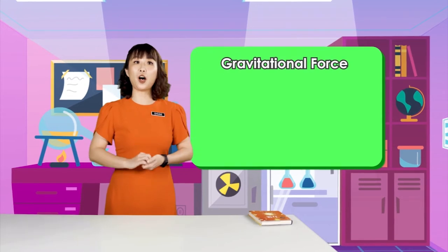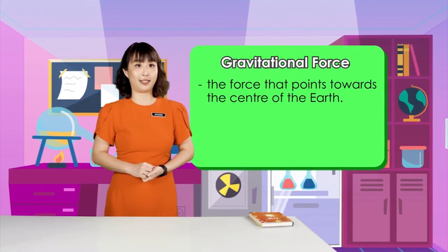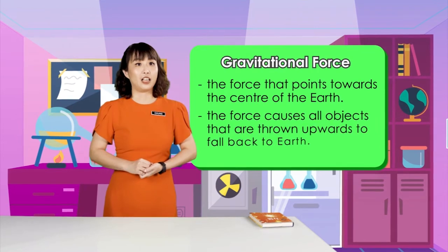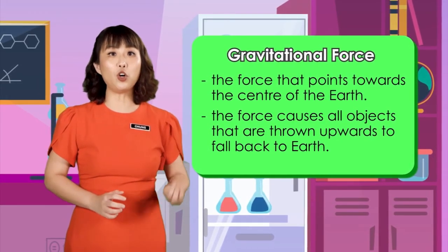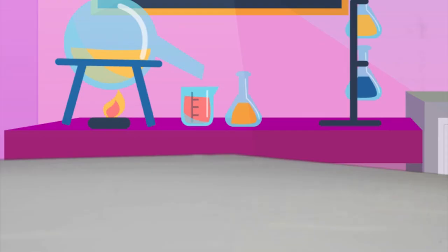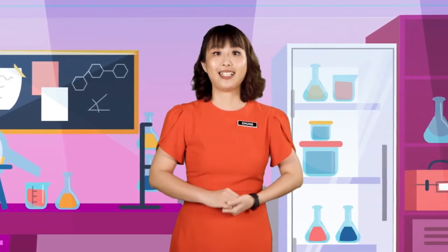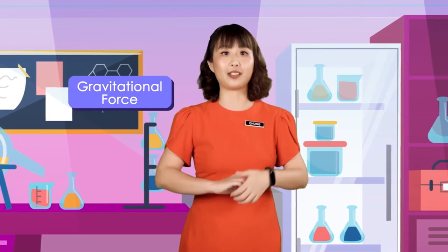Let us understand each force together. Gravitational force points towards the centre of Earth. It will cause all objects that are thrown outwards to fall back to Earth. You know why this book fell on the table? Yes, it is because of gravitational force.